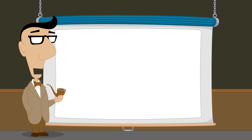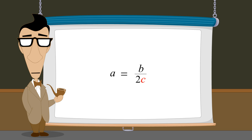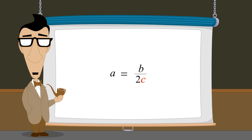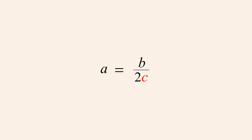Let's say that we are given a formula A equals B over 2C and are asked to solve this equation for C given known values for A and B. To solve for C, we want to rearrange the equation with C alone on the left side. To do this, we must first move C out from the denominator of the fraction, by multiplying both sides of the equation by C. Multiplying the fraction on the right by C is the same as multiplying the fraction's numerator by C, and we can then cancel the C's in the numerator and denominator.